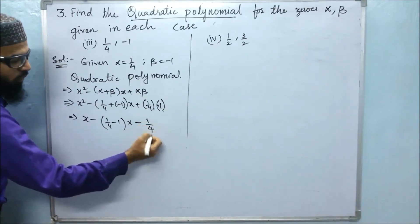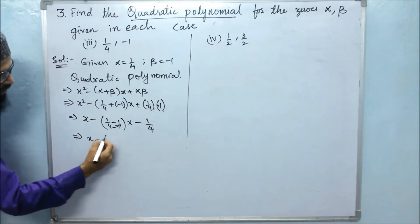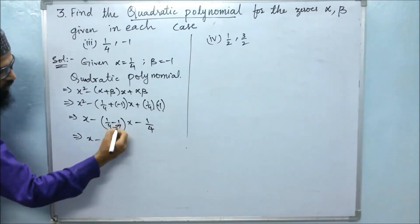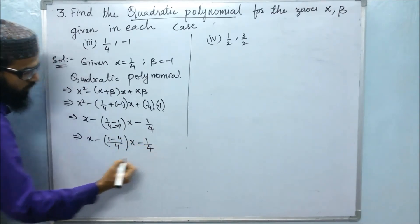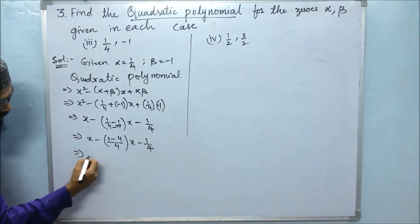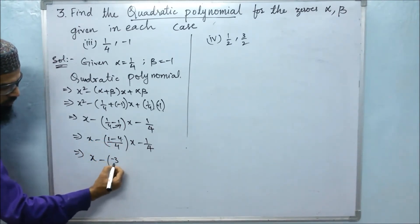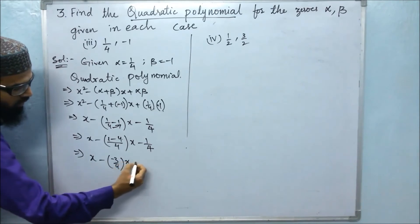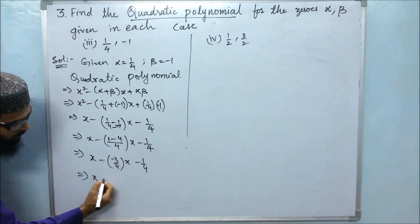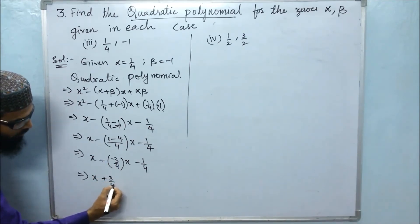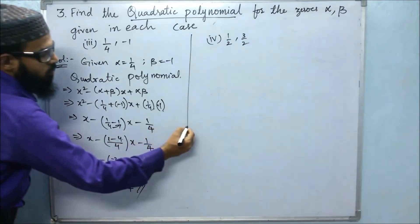Computing 1 by 4 minus 1 gives minus 3 by 4. And alpha times beta is 1 by 4 into minus 1, which is minus 1 by 4. So the required polynomial is x squared minus (minus 3 by 4) x minus 1 by 4, that is x squared plus 3 by 4 into x minus 1 by 4. This is the required polynomial.